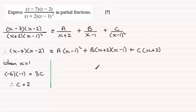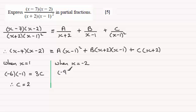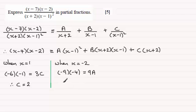Now if we set x equal to minus 2, that's going to take out the A term because (x plus 2) will be zero, and also the B term, just leaving us with the A term. So when x equals minus 2: (minus 2 minus 7)(minus 2 minus 2) = (minus 9)(minus 4) = 36. On the right we have A(minus 2 minus 1) squared = A(minus 3) squared = 9A. The other terms are both zero. So 36 equals 9A, divide by 9, giving A equals 4.